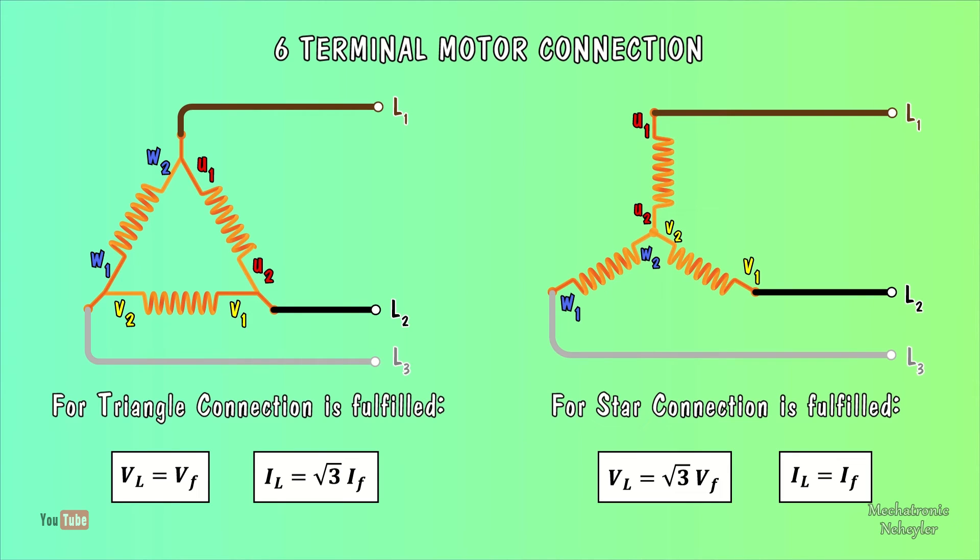Now, I am going to make the delta and star connections in the motor terminal box, as shown in these diagrams.